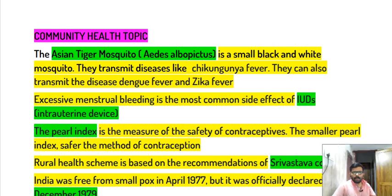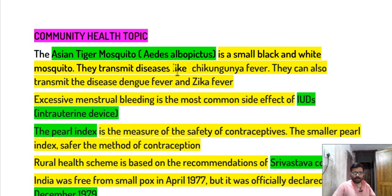An important topic to discuss is the Asian tiger mosquito. Its scientific name is Aedes albopictus. It is a small black and white mosquito that can transmit diseases such as chikungunya fever and dengue fever.